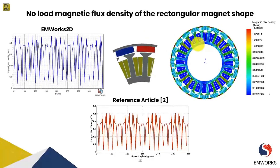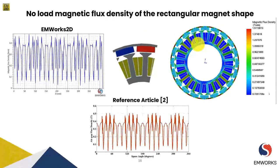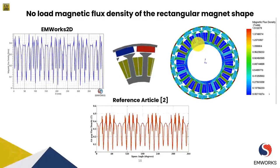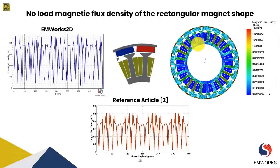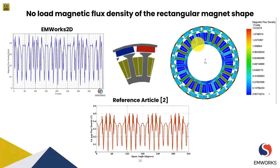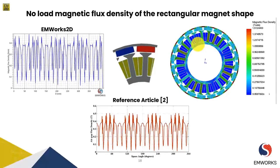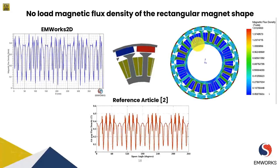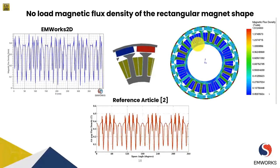Next, we can see the no load magnetic flux density for the rectangular shaped magnet. Similarly, the flux density in the air gap was obtained, with a close match to the article. The magnetic flux density has increased slightly to around 1.51 tesla, but that is also well within the limit of the steel material properties used — it's a good-to-go design.